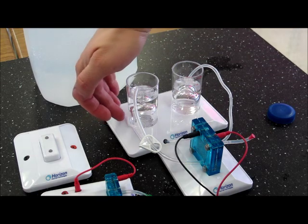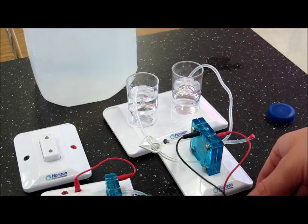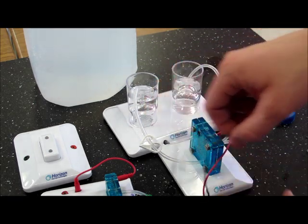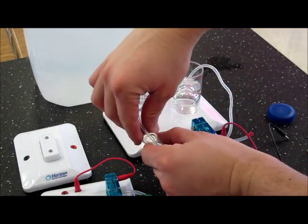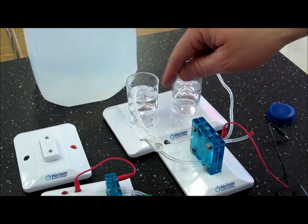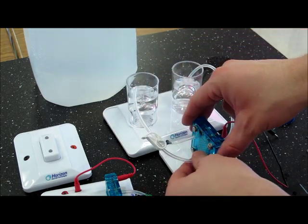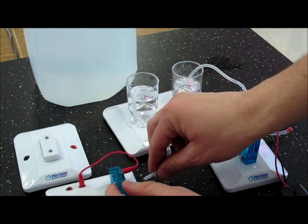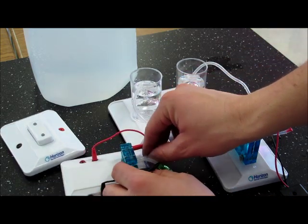Now that we have bubbles coming out of the side here, what you can do is turn off your battery pack. Actually, just disconnect it to get it out of the way completely. And it's very important you pinch this off now so that you're not losing any of your hydrogen gas. You then disconnect it from the bottom terminal there and connect it onto your hydrogen fuel cell.